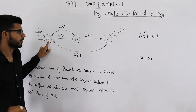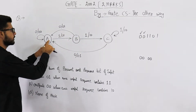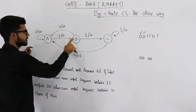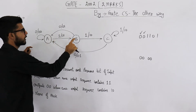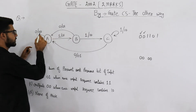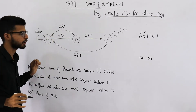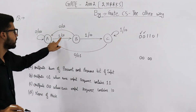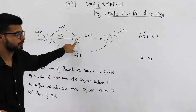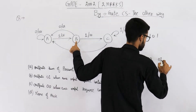Now we are on state A and the input bit is 1. You can see this transition on input bit equal to 1 — we are going to print 0 1 and reach state B.